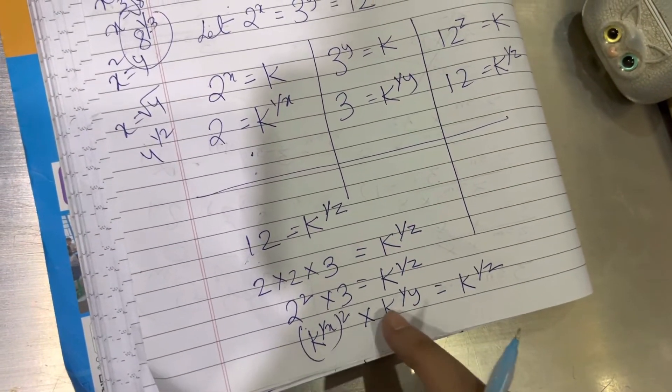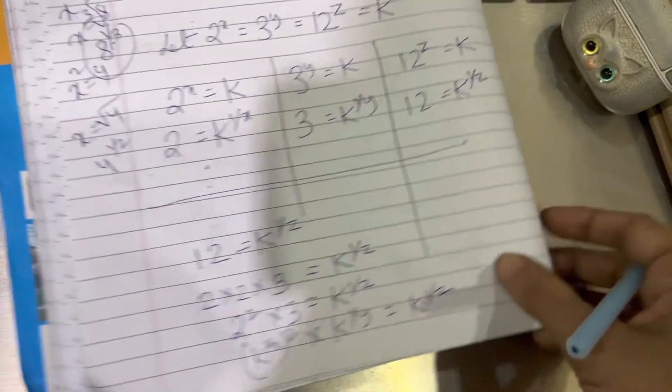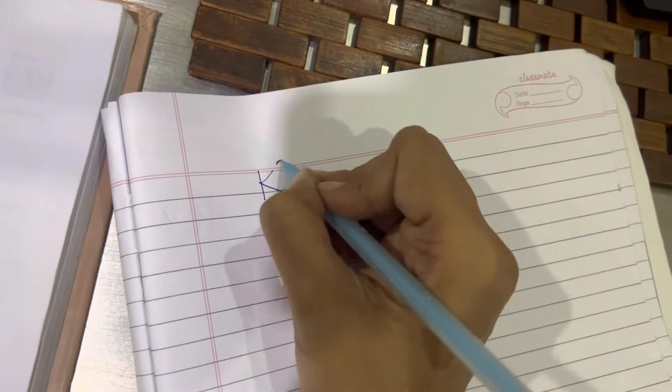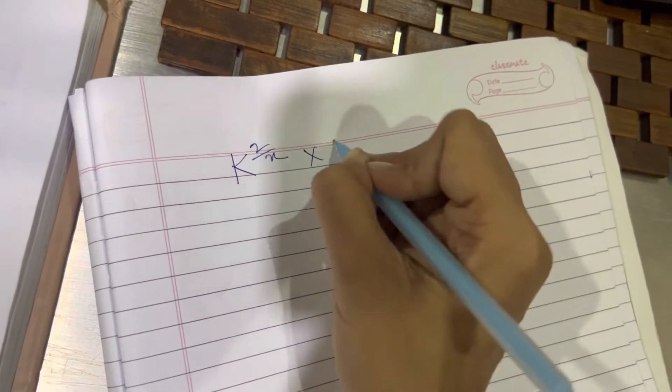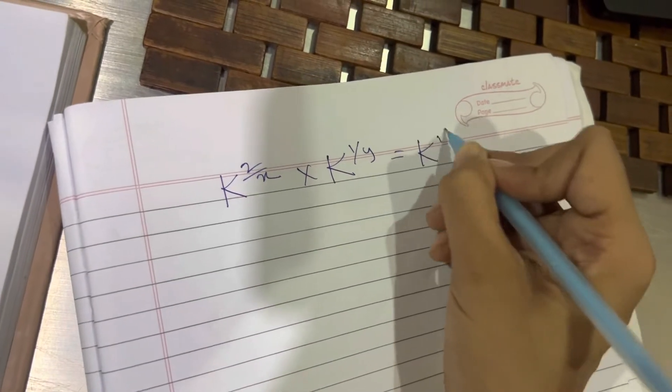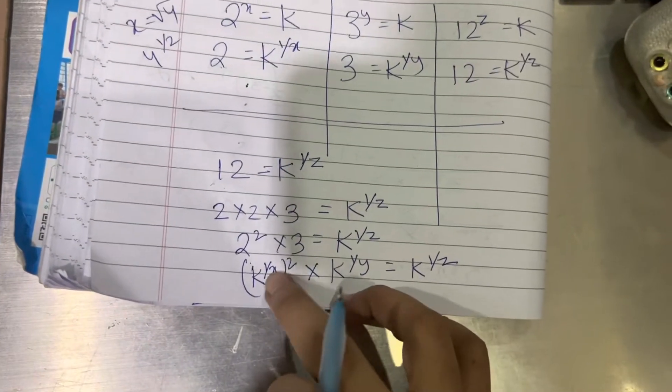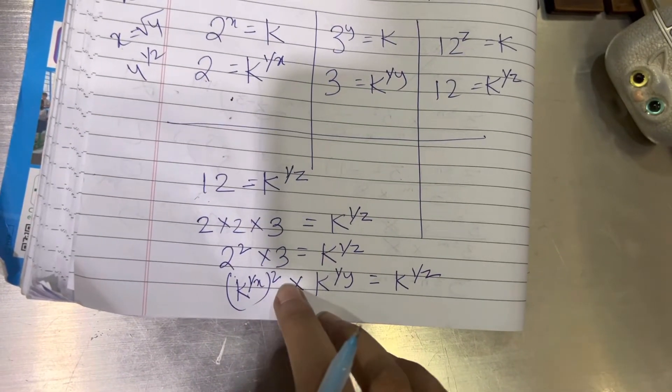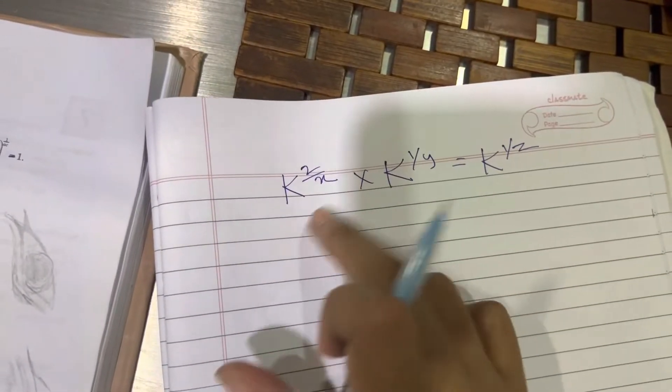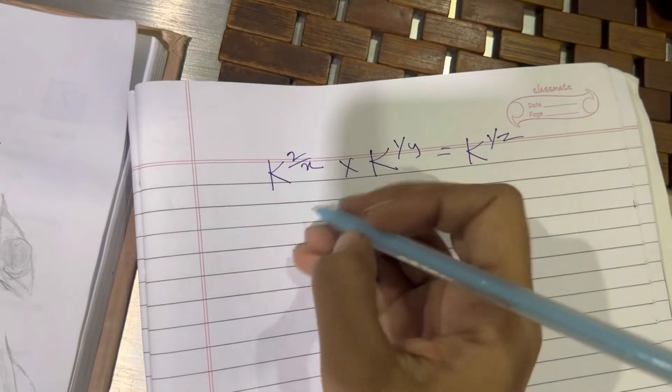Now the powers are equal. I'll just simplify this more. k to the power 2 by x into k to the power 1 by y equals k to the power 1 by z. Power over power gets multiplied. So 1 by x into 2 is 2 by x. Now here, since the bases are equal and they are multiplied, the powers will be added.